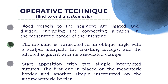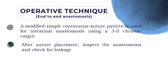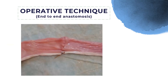Start positioning with two simple interrupted sutures: the first placed on the mesenteric border, and another on the anti-mesenteric border. The clamps are used to prevent the intestinal contents from spreading. Stay sutures are placed as temporary surgical sutures during the operation to hold or manipulate the operating area and keep the organ in position. A modified simple continuous suture pattern is used for intestinal anastomosis using 3-0 chromic gut. After suture placement, inspect the anastomosis and check for leakage, as anastomotic leaks put animals at greater risk of further health complications and mortality.